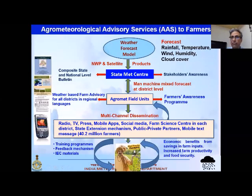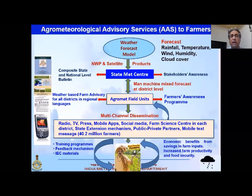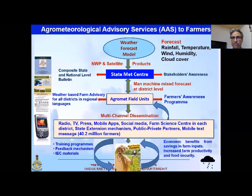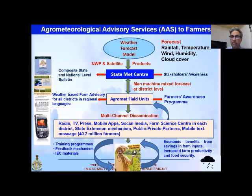For example, if the forecast shows monsoon onset is going to occur in the coming days in Karnataka or Maharashtra, experts will tell farmers in advance to start preparing their fields, as enough soil moisture is needed for sowing. For a farmer in Kerala who already has a crop needing irrigation, the advisory would say: since rain is coming, please do not irrigate now. This way the farmer can save irrigation water.